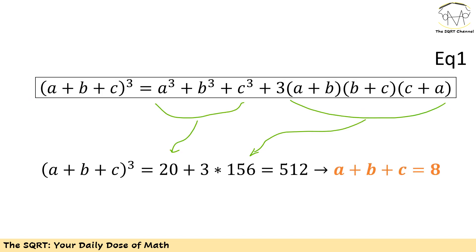Based on identity 1, I can expand (a plus b plus c) to the power of 3 using the cubed terms and the other terms. Substituting a cubed plus b cubed plus c cubed equals 44 and (a plus b)(b plus c)(c plus a) equals 156, I find that (a plus b plus c) to the power of 3 equals 512, so a plus b plus c equals 8.